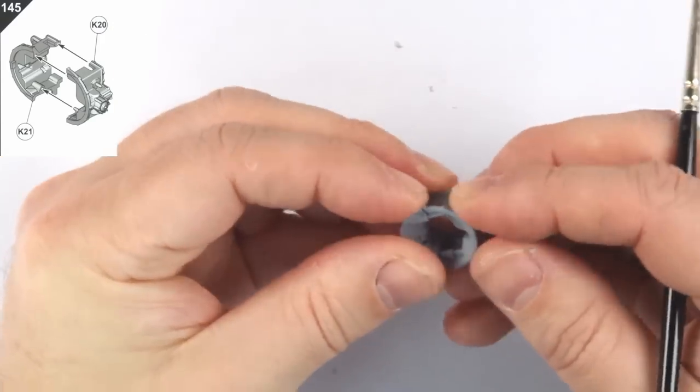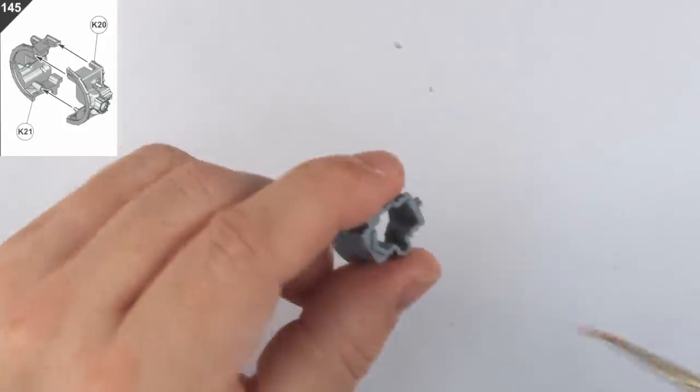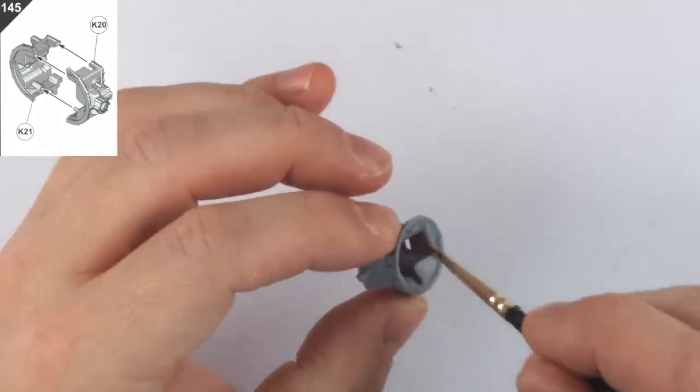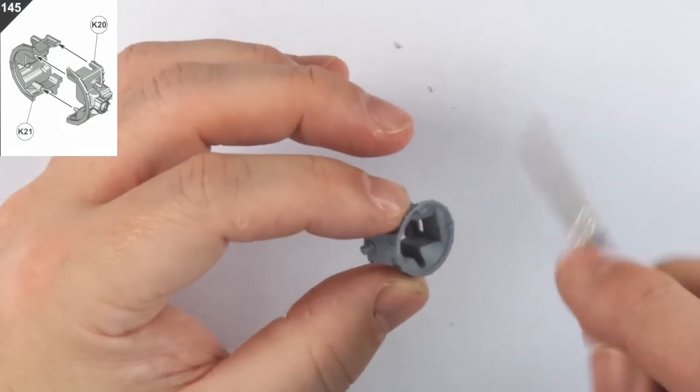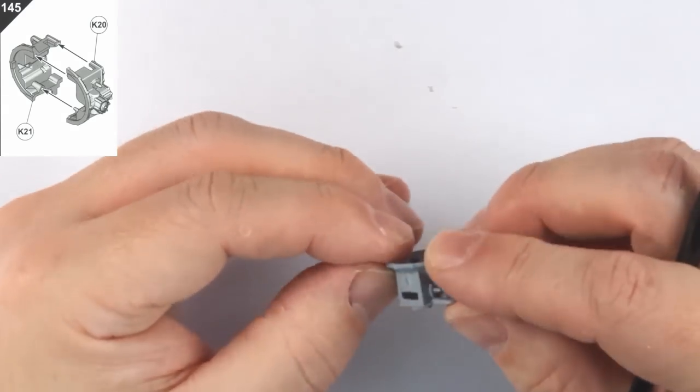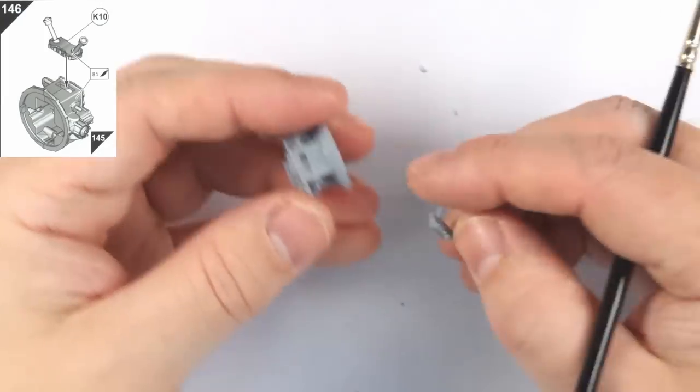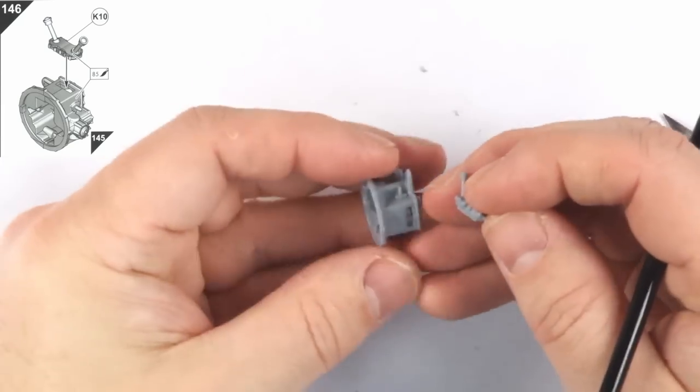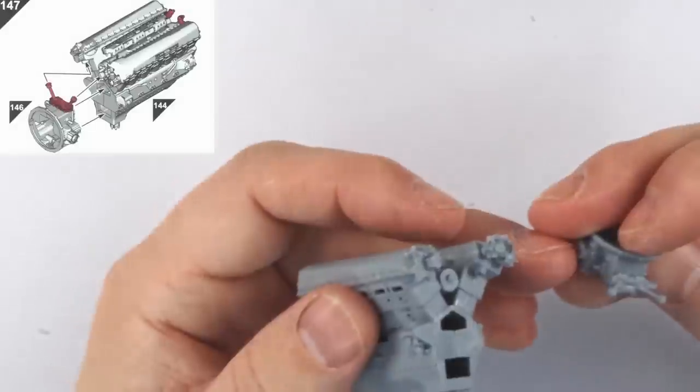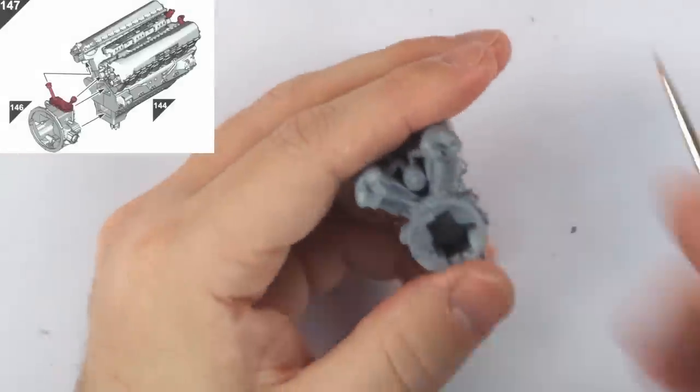We then move on to the supercharger coupling with step 145 and 146 which are straightforward assemblies. We add that coupling to the engine block in step 147 which I found a perfectly snug fitting.